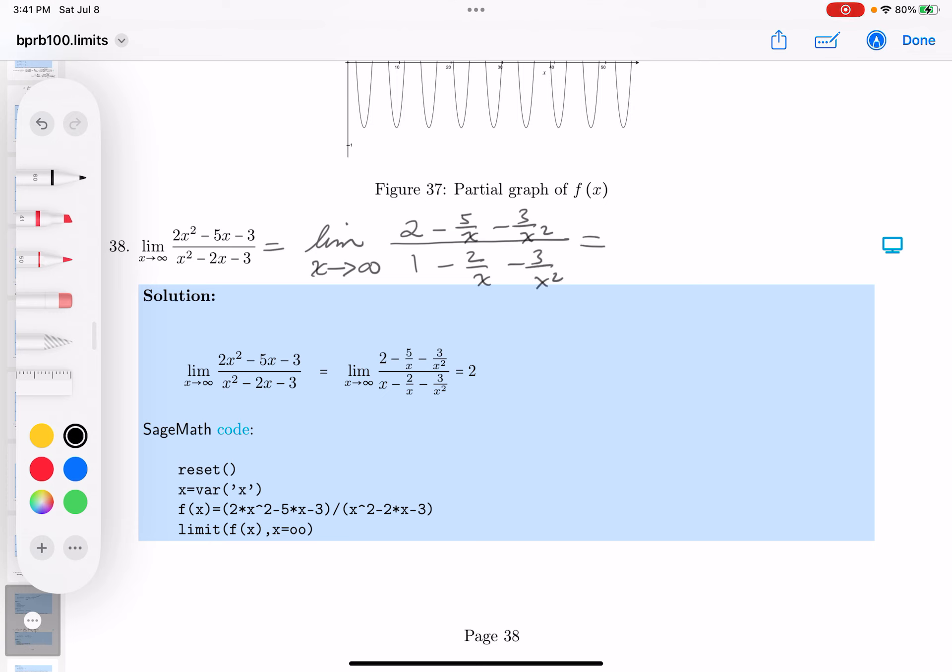What's nice, when x gets really large, these terms disappear very quickly. So we're left with 2 divided by 1, which is just 2.